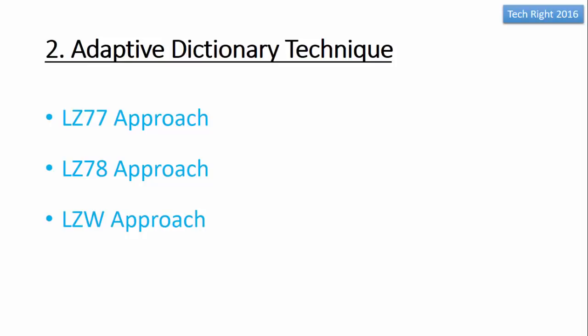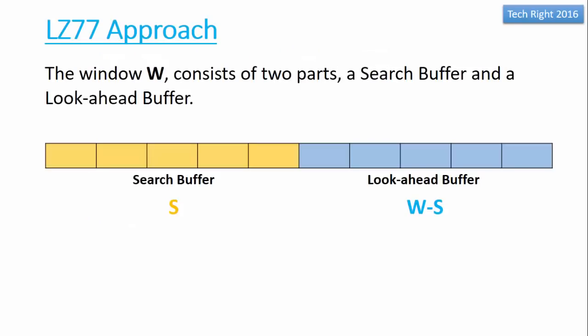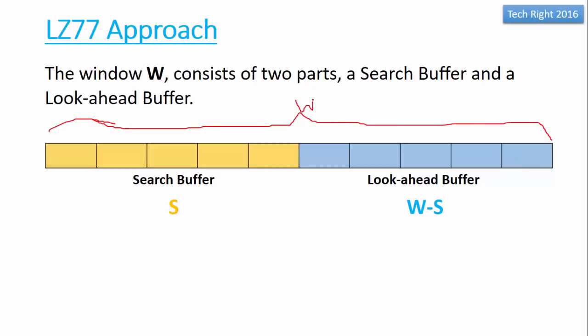We will see each one by one. First we will see the LZ77 approach with an example. In the LZ77 approach we use one window called the sliding window, and that consists of two parts: the first is the search buffer and the second is the look-ahead buffer. The orange part is considered the search buffer, denoted by S.